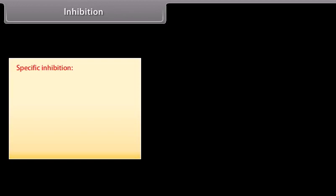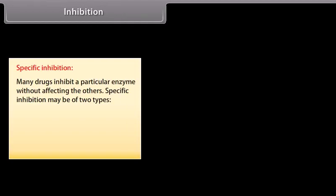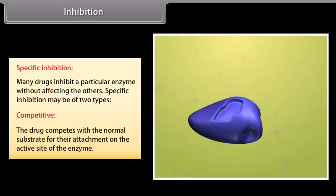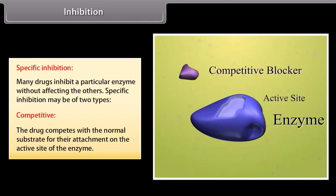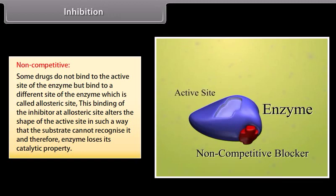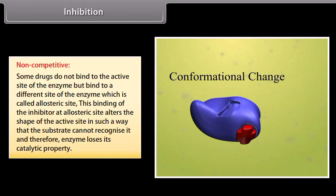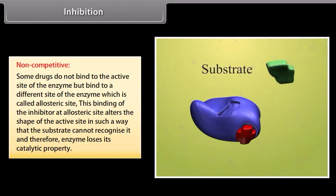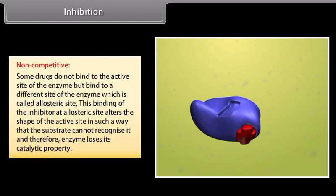Specific inhibition: many drugs inhibit a particular enzyme without affecting the others. Specific inhibition may be of two types. Competitive: the drug competes with the normal substrate for attachment on the active site of the enzyme. Non-competitive: some drugs do not bind to the active site of the enzyme but bind to a different site called the allosteric site. This binding of the inhibitor at the allosteric site alters the shape of the active site in such a way that the substrate cannot recognize it, and therefore the enzyme loses its catalytic property.